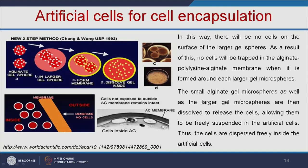To overcome this, there is another method called the two-step method. First, cells are encapsulated into an alginate gel sphere, then the smaller gel spheres are encapsulated into a larger gel sphere. Then the membrane is formed, and the smaller spheres are dissolved. All the cells are evenly distributed inside the artificial cell. All cells are safely inside the membrane and none are exposed to the outside, so the artificial membrane remains intact.